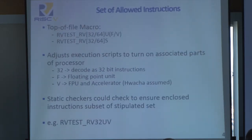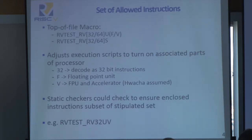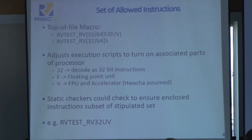Looking further into what the possible test virtual machines are, you stipulate which one you want with a top of file macro, which starts with RV test underscore RV, and then whether using 32 or 64 bit instruction decoding, and then U for user space or S for supervisor. Furthermore, if you're writing a user space test, meaning you will only be using user space opcodes, you can further stipulate to turn on the floating point or vector unit, or any other accelerator, by stipulating F or V. If you say S, it is assumed that all of these items will already be turned on for you.